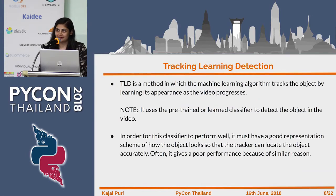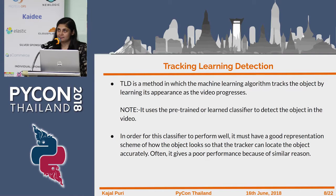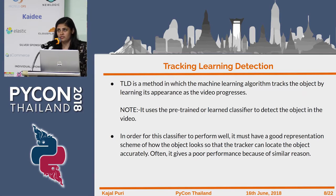I want to briefly insert TLD because I have done it at my work and I find it really interesting. TLD stands for Tracking-Learning-Detection and is a different methodology. What it does is it tracks the object and learns its appearance as the video progresses. It uses pre-trained weights of a classifier — you can use Haar cascade, HOG descriptor, or pre-trained weights of deep learning architectures like VGGNet or InceptionNet — and then learns more about the object as the video progresses.